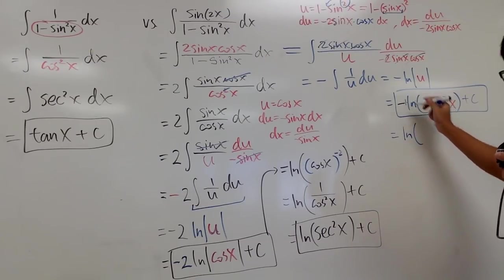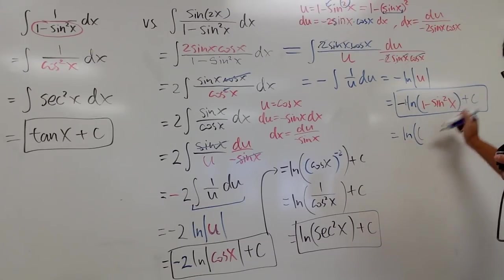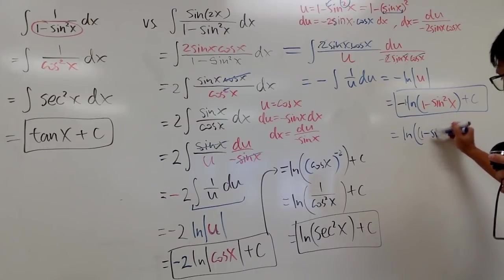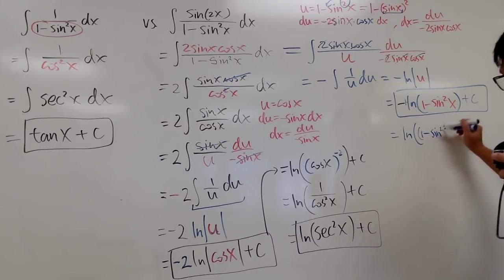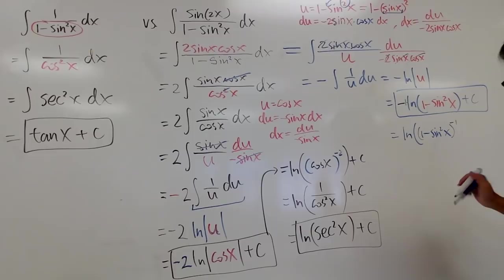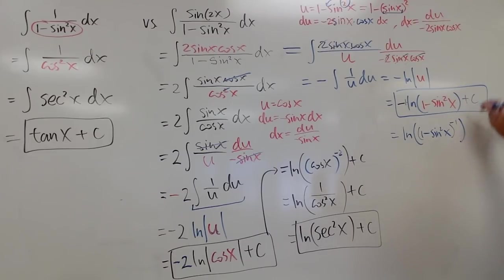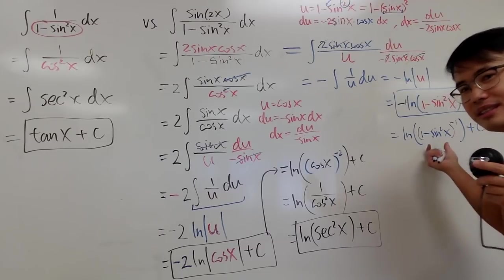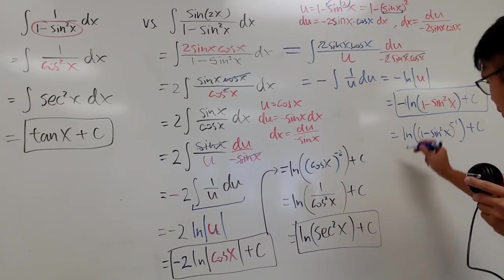...parenthesis, and then I will put this inside: 1 minus sine squared x, raised to the negative 1 power, by the log property. Then plus C.